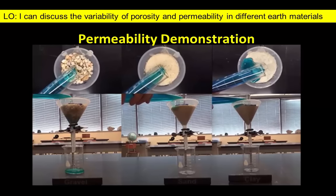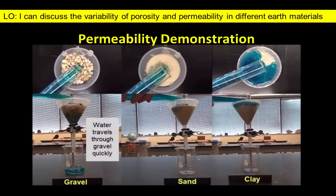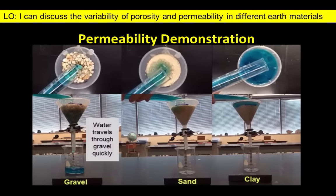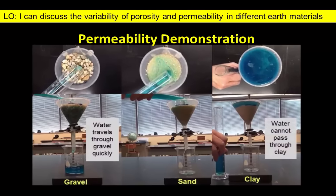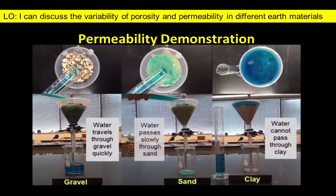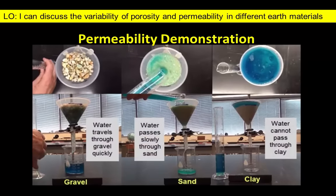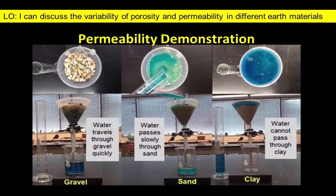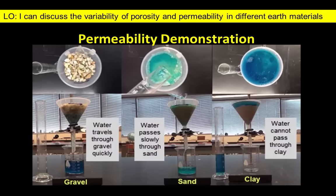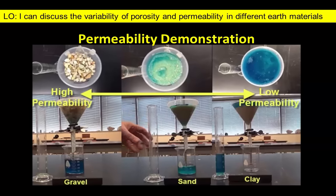As you can see, water quickly passes through the gravel and almost all of the original water collects in the beaker below. In contrast, water pools on top of the clay and is unable to flow downward between the tiny clay particles, making it essentially impermeable at the scale of this experiment. Water passes through the sand more slowly than the gravel, and only about 75% of the original water makes it to the beaker during the time of the demonstration. The permeability of these three materials decreases as we move from the gravel on the left to the clay on the right.